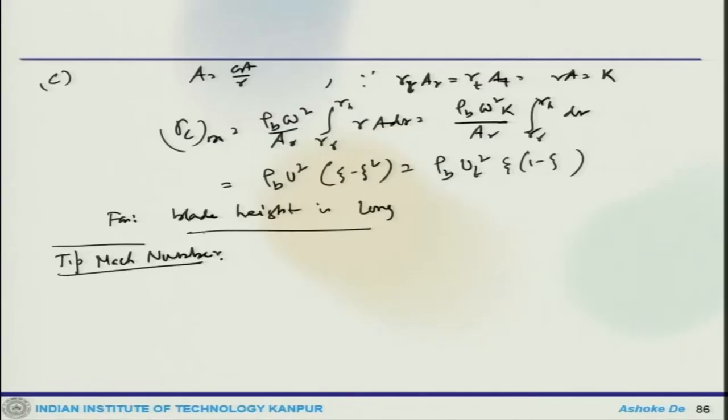Let us look at the factors which actually cause the design of the axial flow compressor. We have looked at the different basic design parameters like rotational speed, blades, and the kinds of forces they are exposed to. We are now looking at the tip Mach number, which is an important parameter because the maximum Mach number in the axial flow compressor occurs at the blade tip of the rotor inlet on the first stage.